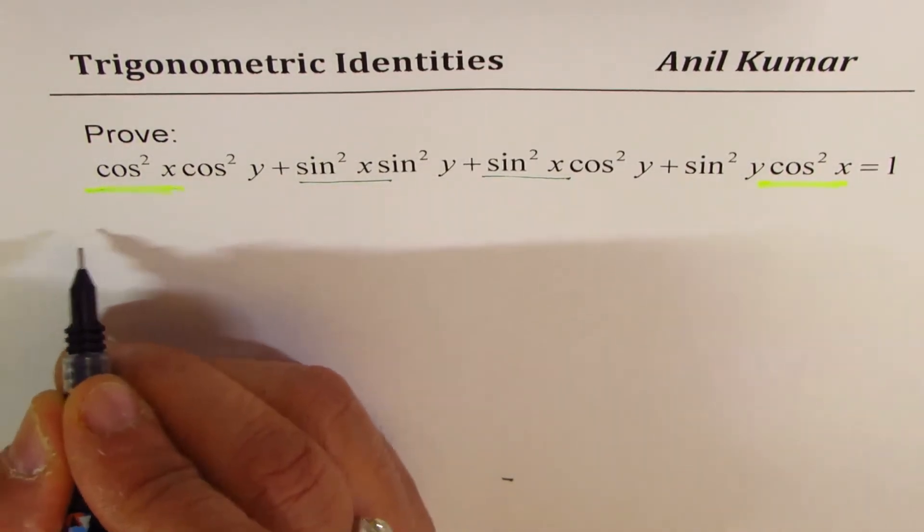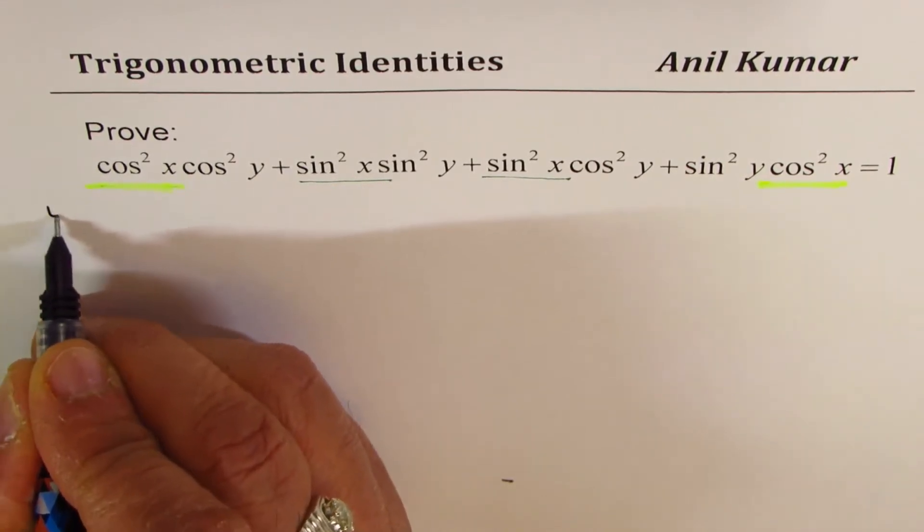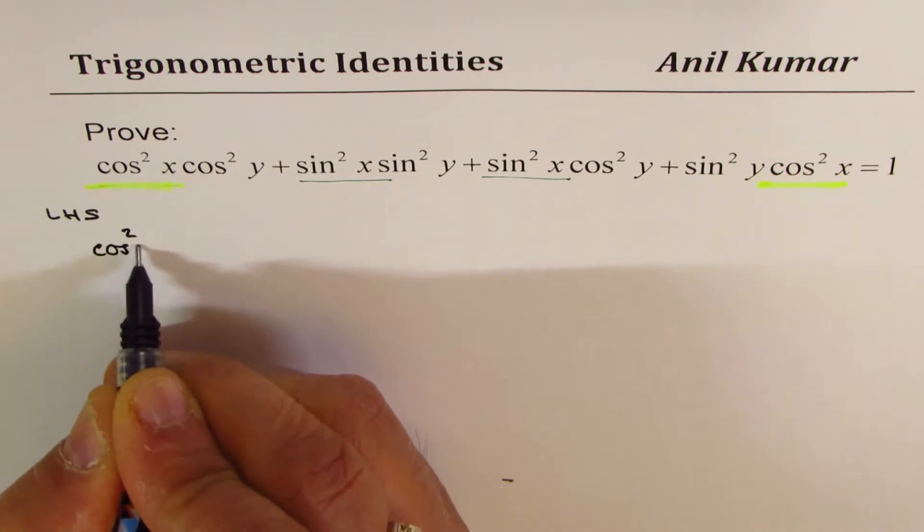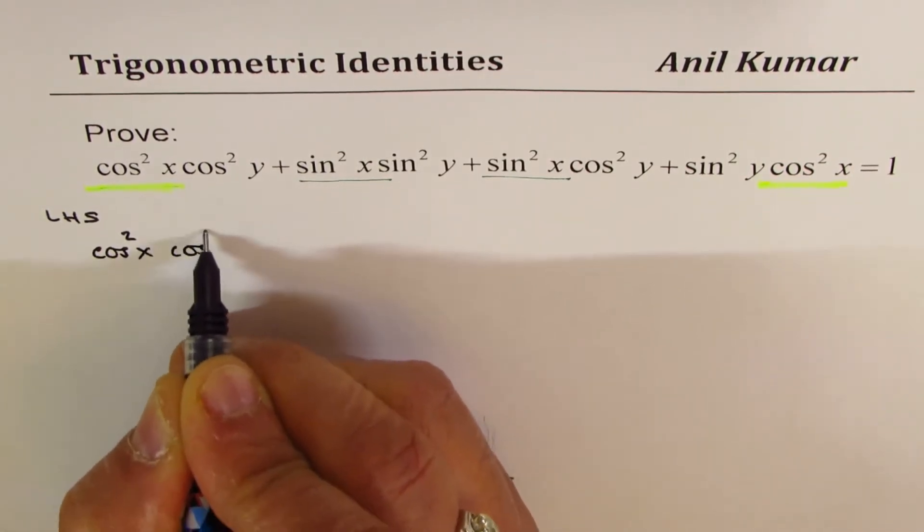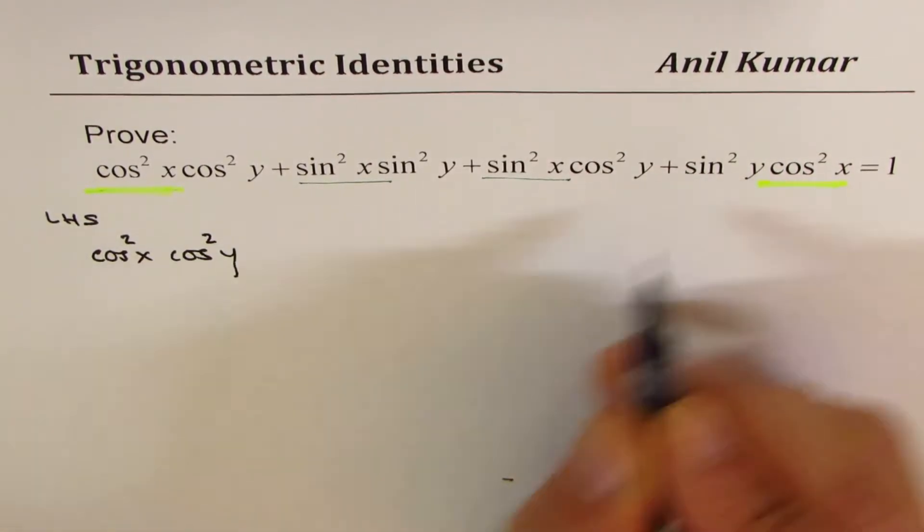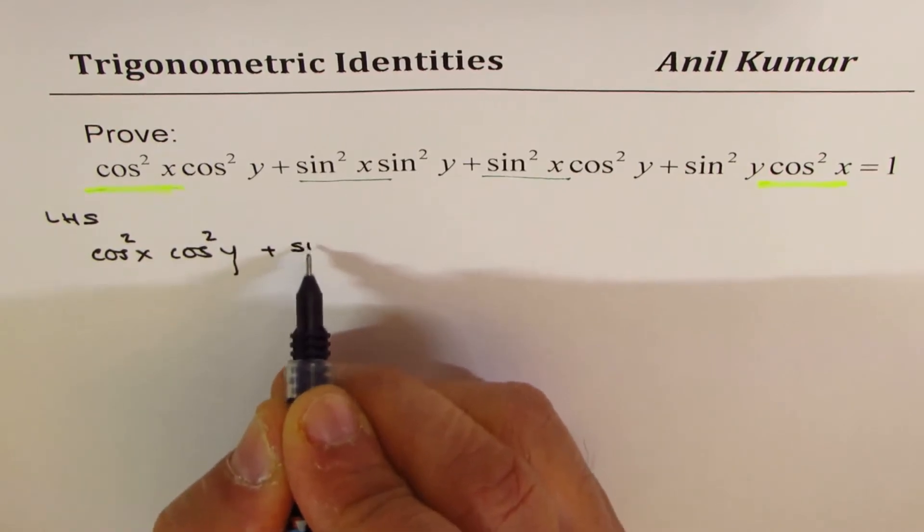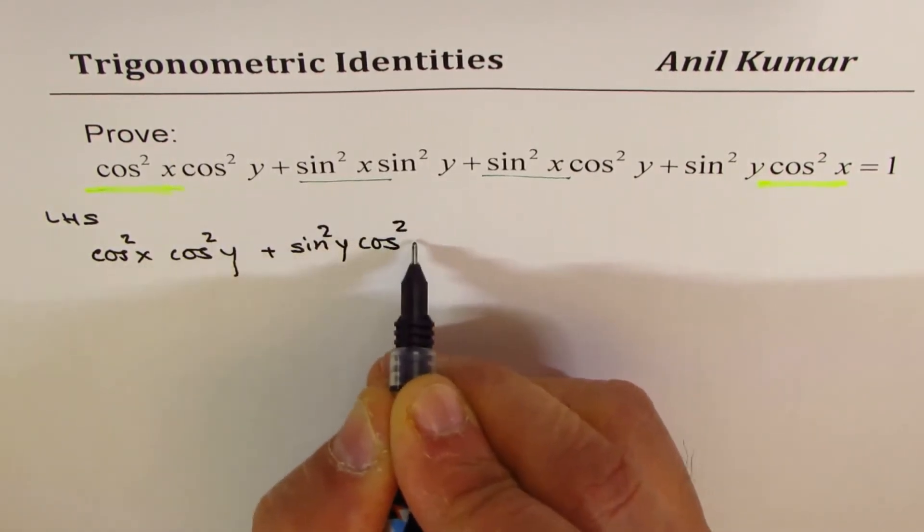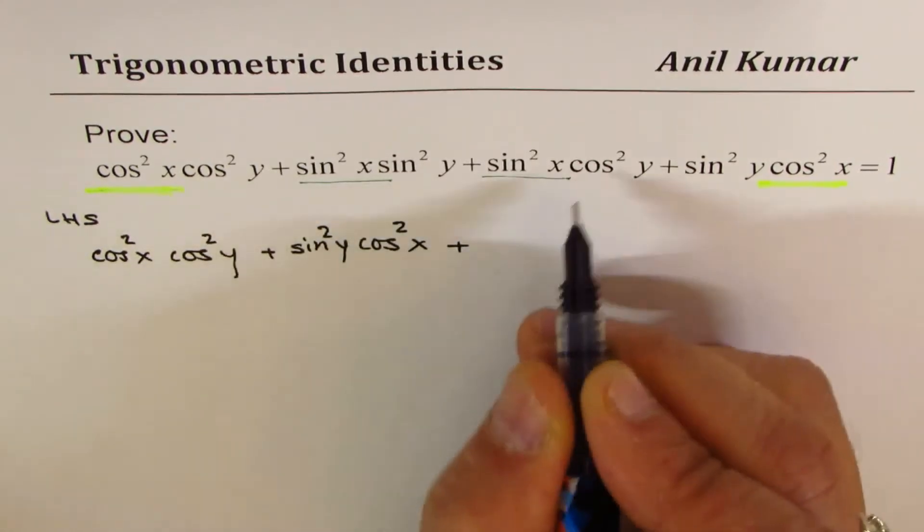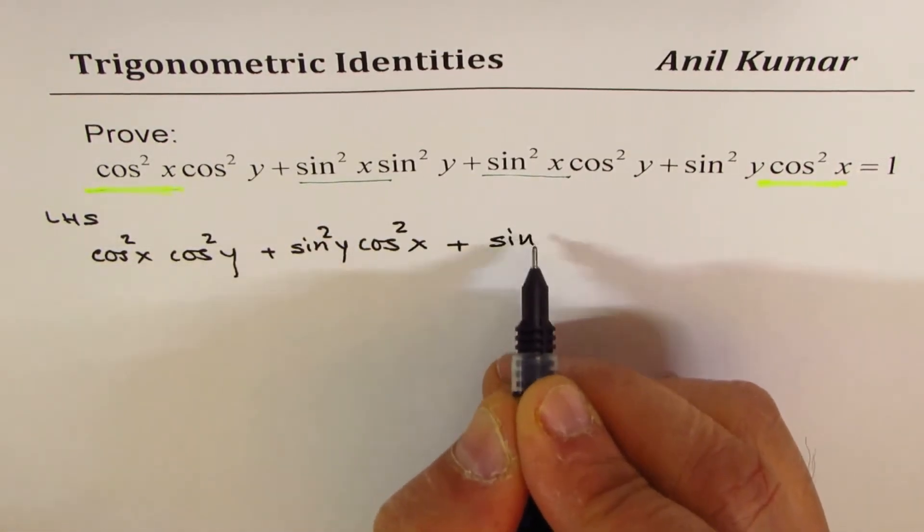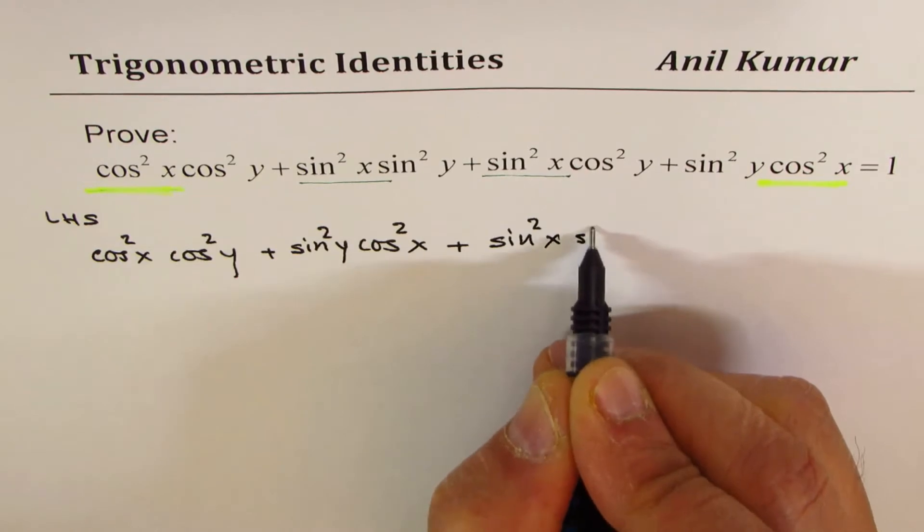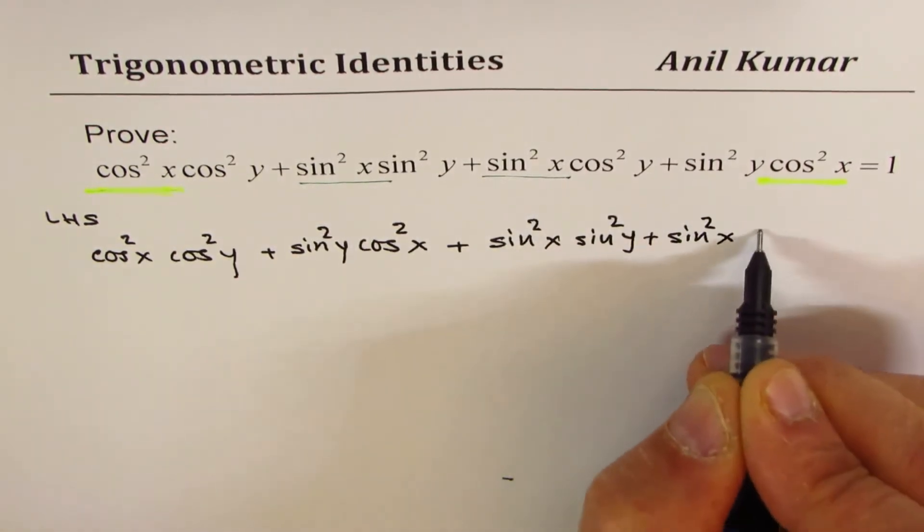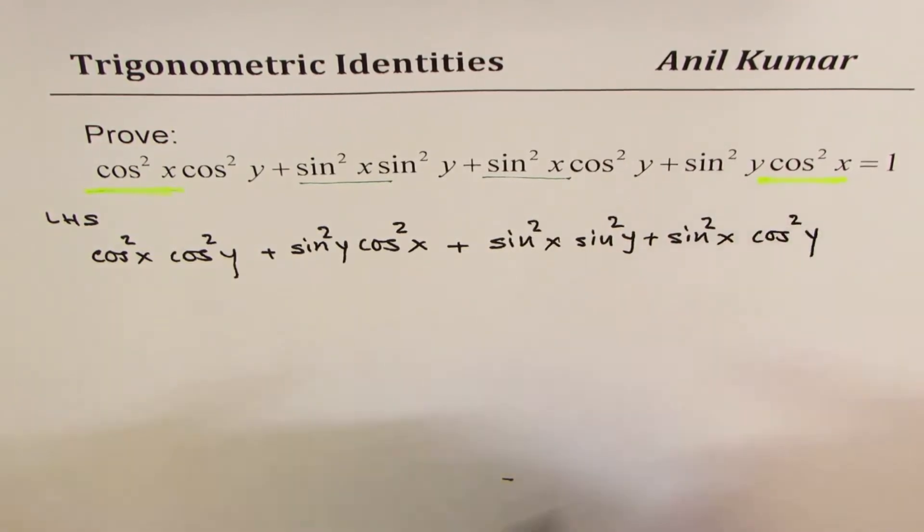I'll write the left hand side. We'll start with left hand side as cos²x cos²y, and I'll write this term first, which is plus sin²y cos²x. And now I'll write the middle two terms, which are sin²x sin²y plus sin²x cos²y.